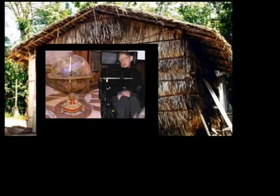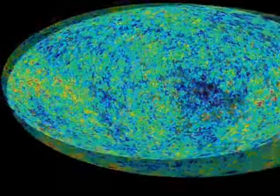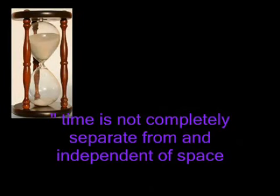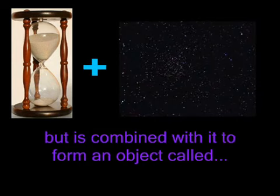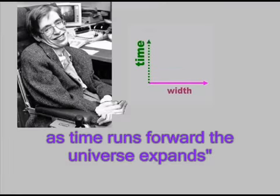Hawking also claims that he lives within a sphere known as space-time. He asserts that the sphere is four-dimensional and that it is expanding. Time is not completely separate from and independent of space, but is combined with it to form an object called space-time. As time runs forward, the universe expands. Time runs forward? In which direction is that? For the purposes of science, time is an abstract concept and not a brick. It cannot and does not form a malleable balloon with space.